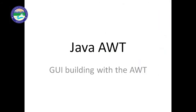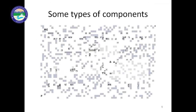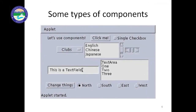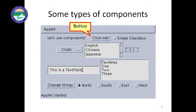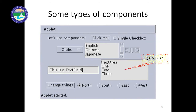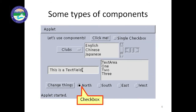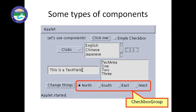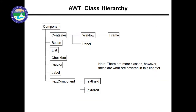Today we will discuss the complete program of AWT. As we know, the different components are: label, button, checkbox, choice button, scroll bar, text field, text area, checkbox as well as checkbox group, and many more components related to Java AWT.